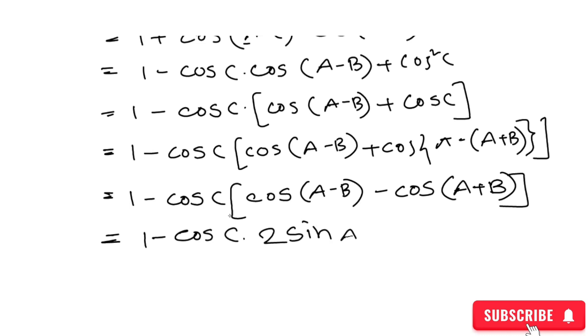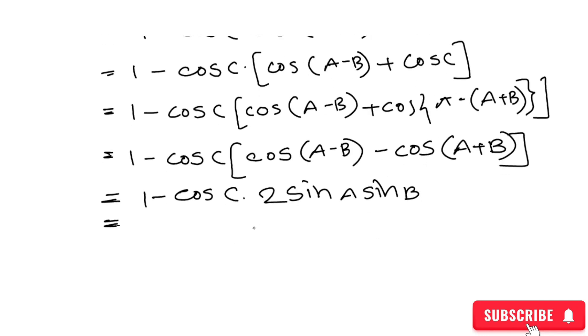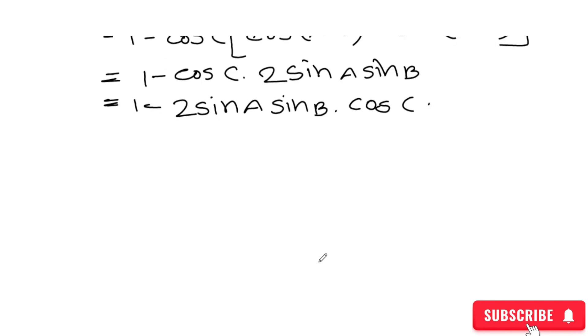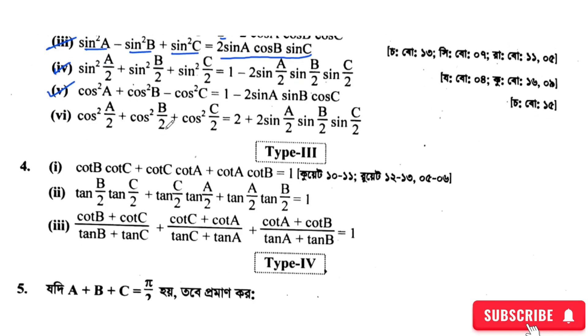The answer is: 1 minus 2 sin A sin B cos C. So finally the answer is confirmed. The other part: the left-hand side equals cos²(a/2) plus cos²(b/2) plus cos²(c/2), which for a triangle — since A+B+C = π — gives this as the result on the left-hand side.